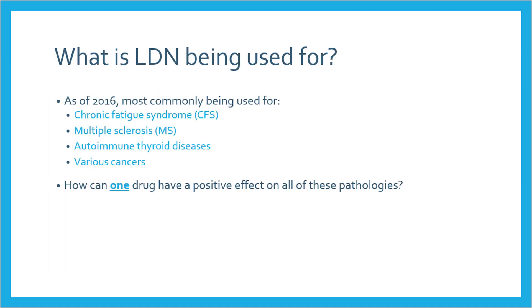LDN is most commonly being used for chronic fatigue syndrome, multiple sclerosis, autoimmune thyroid diseases, and various cancers. However, it's also being used for other conditions such as fibromyalgia, chronic pain, and GI diseases. What is important to note is that these disorders share a particular feature: the immune system plays a central role in all of them.